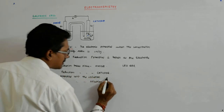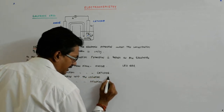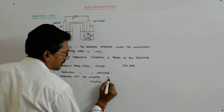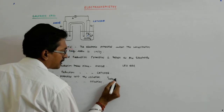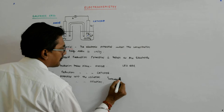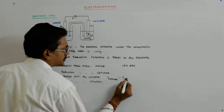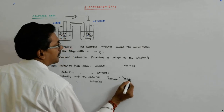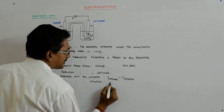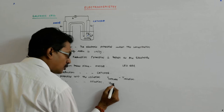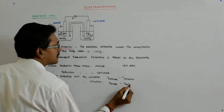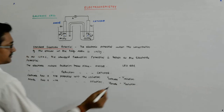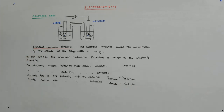What I mean by this is: V_cathode minus V_solution is positive, and here V_anode minus V_solution is negative.